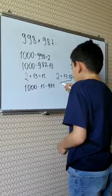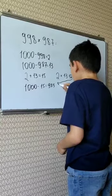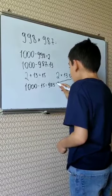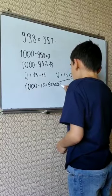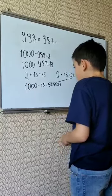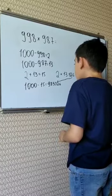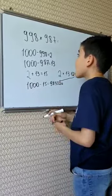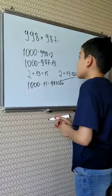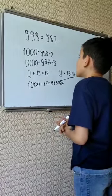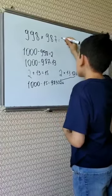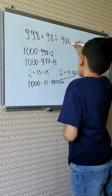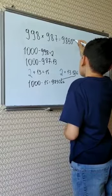We need to link 026 to 985. That's 985026. So, 998 multiplied by 987 is 985026.